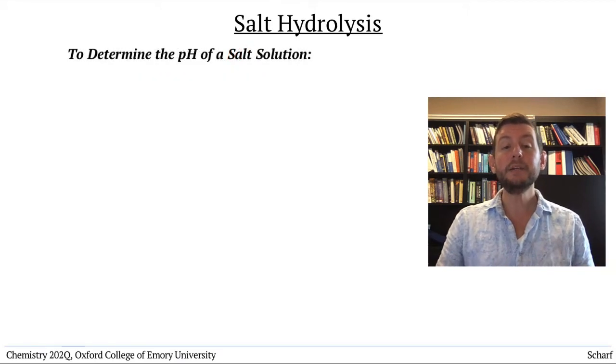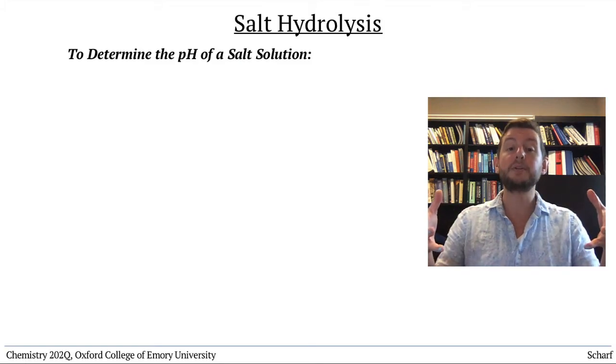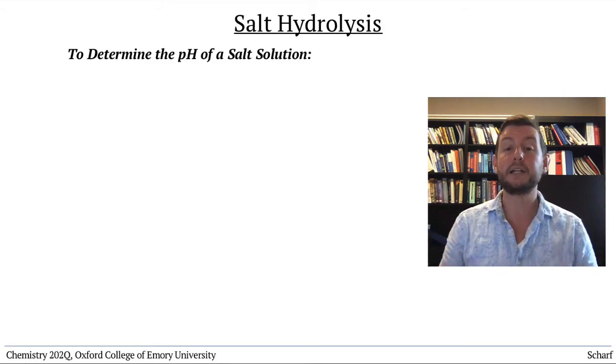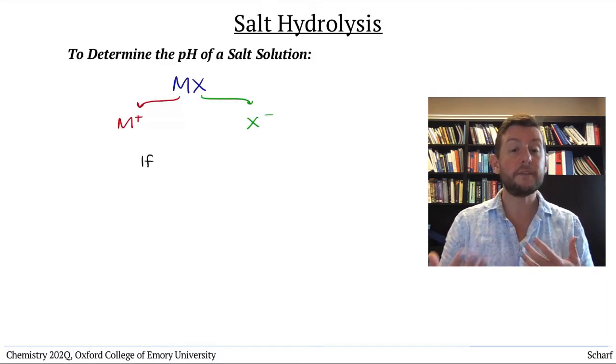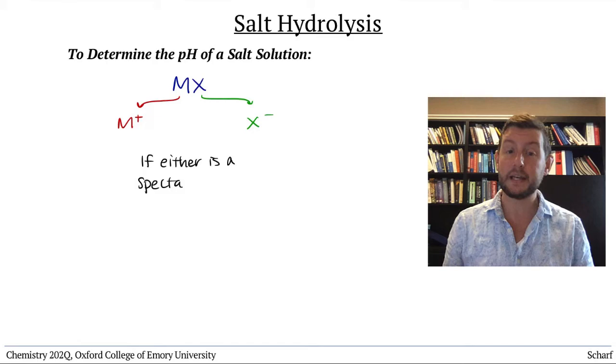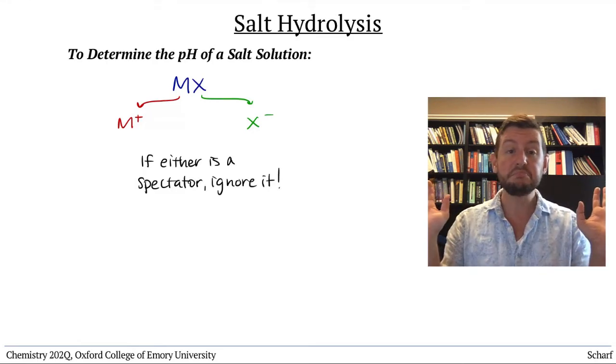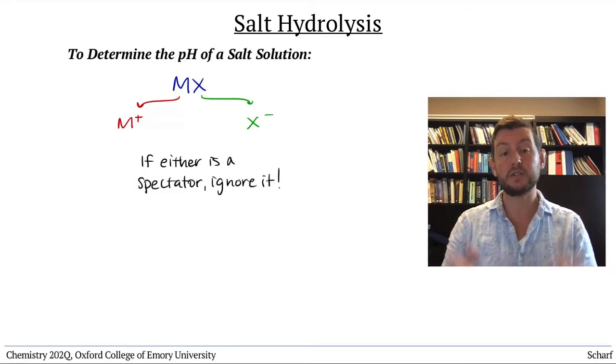To determine how the dissolution of a particular salt might impact pH, first draw the structures of the two ions. If either of the ions are spectators, simply ignore them. They don't impact the pH of a solution.